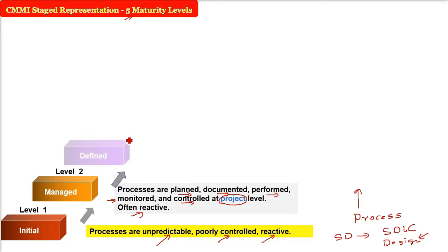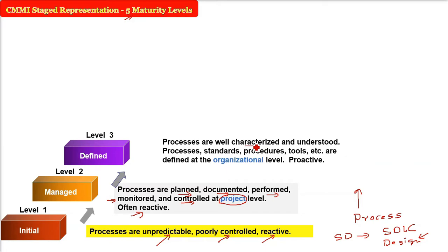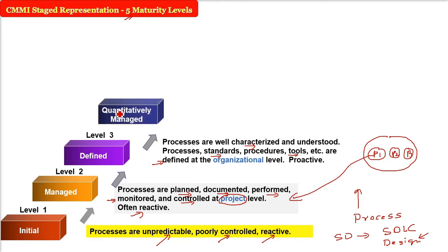The third level is defined. All these processes are well characterized and understood. The processes, standards, procedures, tasks, activities, and tools used are all defined not at the project level, but at the organizational level as a whole. An organization may have multiple projects, but we're talking about these at the organizational level. At the defined level, the approach is proactive.